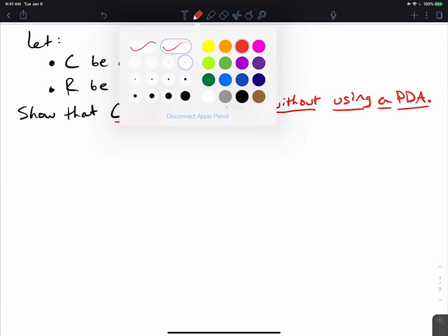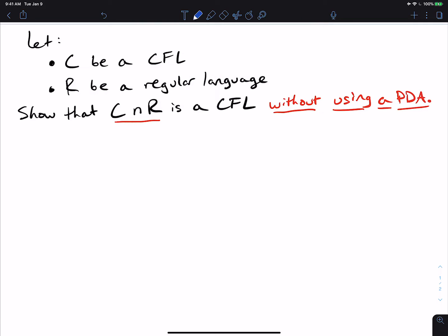So recall that the only other model of computation for the context-free languages that is usually taught is a CFG. So let's let G be a CFG for the language C.